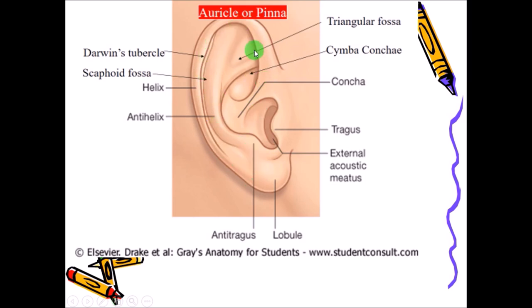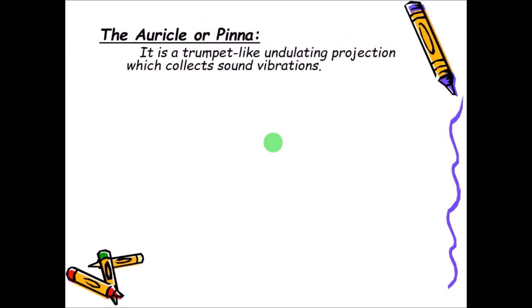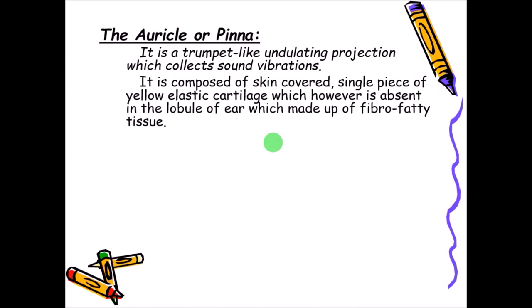This structure is called the auricle or pinna. Deep inside we have the external acoustic meatus, a tube-like structure. The auricle is trumpet-shaped and collects sound vibrations. It is covered by skin and inside contains yellow elastic cartilage, which is why it is flexible — whenever twisted, it recovers back to its normal position and shape.